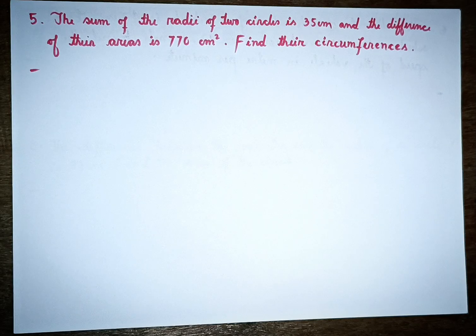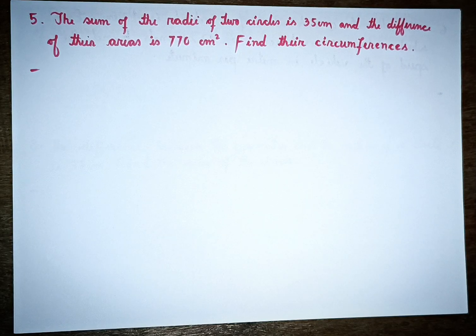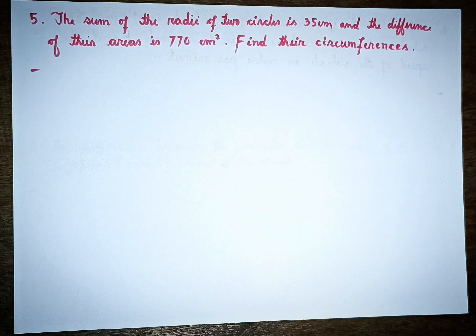The sum of the radii of two circles is 35 cm and the difference of their areas is 770 cm square. Find their circumference.